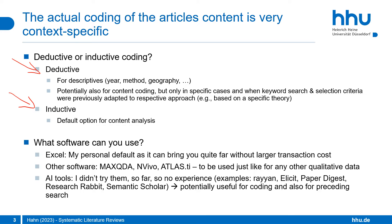Nowadays you can also use AI tools. I haven't tried them myself yet, so I don't have personal experience, but I think they're interesting especially for the future. The field is evolving so fast that you'll probably need to look for current tools at the time you start your research. These tools can potentially be useful not only for coding articles but also for the preceding search for your body of literature, which I cover in the second video of this series.